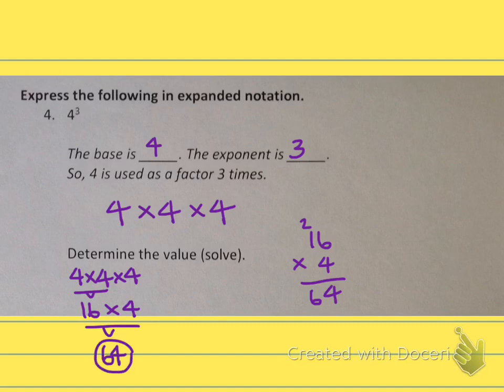We get 64. So the value is 64. 4×4×4 is 64, or 4 to the 3rd power equals 64. So this is how we are solving the exponential form.